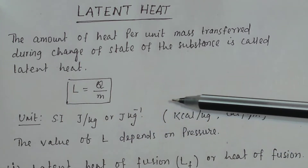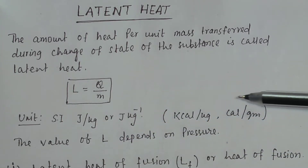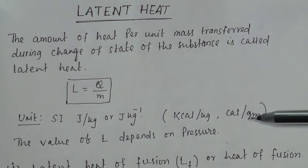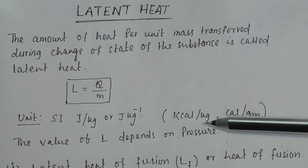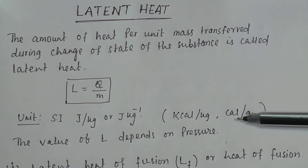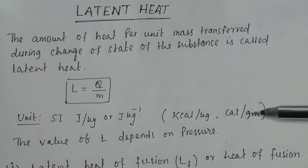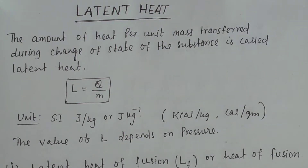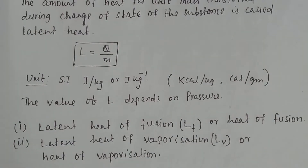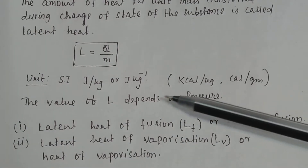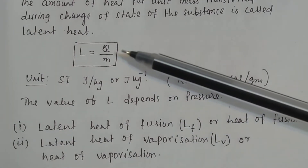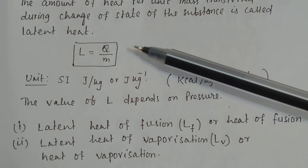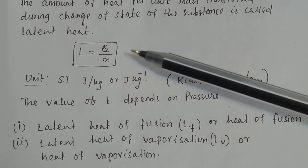We sometimes use the unit in terms of kilocalorie per kg or calorie per gram. Remember, the value of latent heat depends upon the pressure.